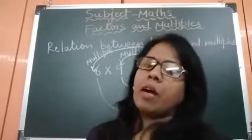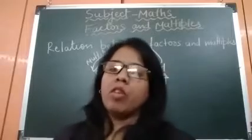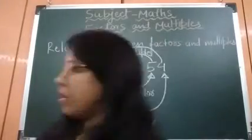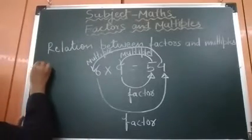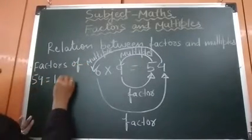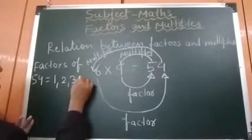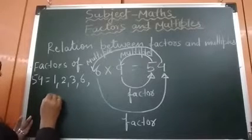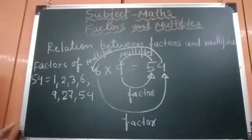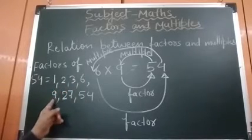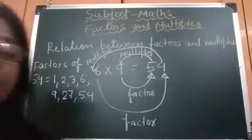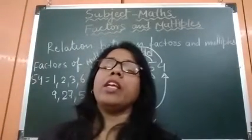Factors of a number are always less than or equal to the given number. For example, factors of 54 are: 1, 2, 3, 6, 9, 27, and 54. Check — all these numbers are either less than 54 or equal to 54. So factors of a number are always less than or equal to the given number.